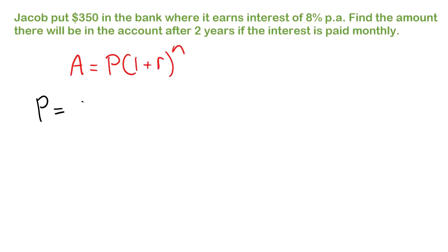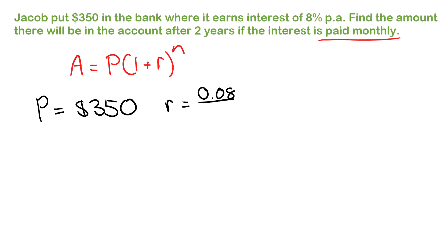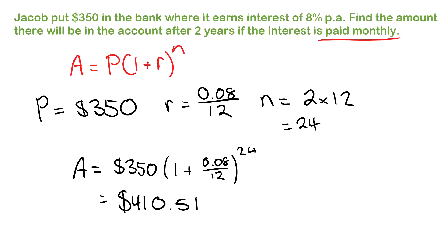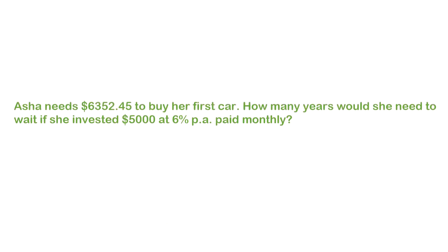The present value is three hundred and fifty dollars. The rate is eight percent per annum, but since it's paid monthly we use zero point zero eight over twelve. The number of periods is two years times twelve months, which is twenty four. So A equals three fifty times one plus zero point zero eight over twelve to the power of twenty four. That gives four hundred and ten dollars and fifty one cents after two years of compounding monthly.